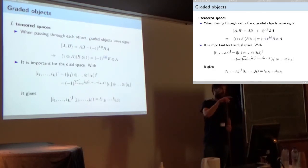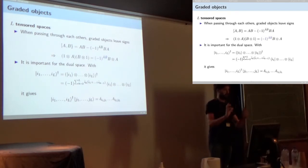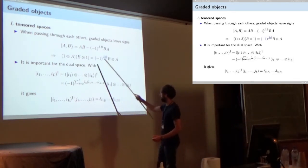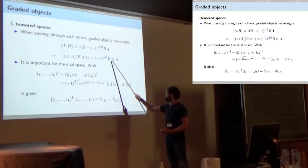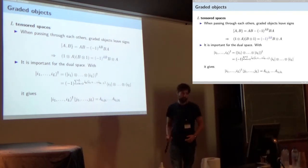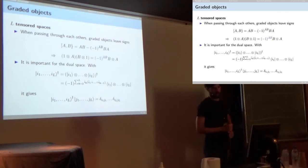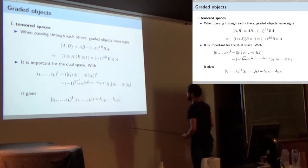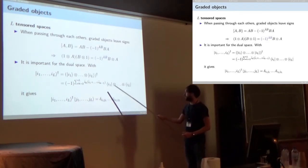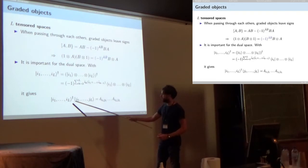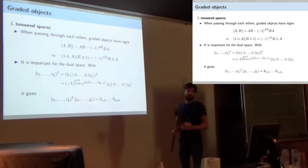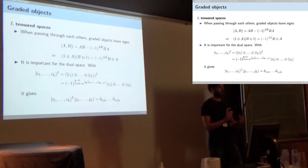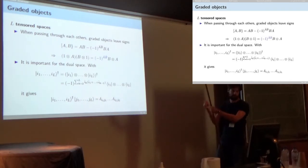It becomes interesting when you consider tensor products, because when passing a graded object past another, you get a sign if these objects are both odd. This requires using a graded commutator rather than the usual one. When constructing the dual of a tensor product space, you must take great care of all signs, because you have to insert signs inside the definition to compensate for all the signs that arise from passing vectors and covectors past each other.